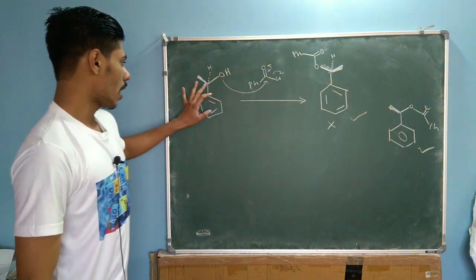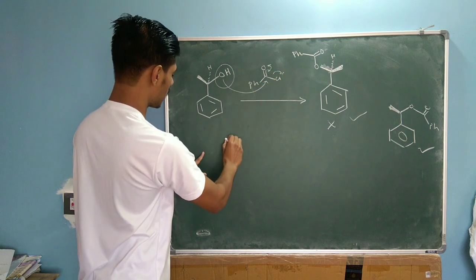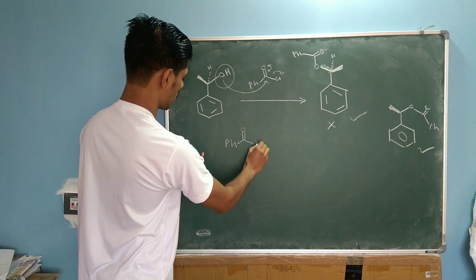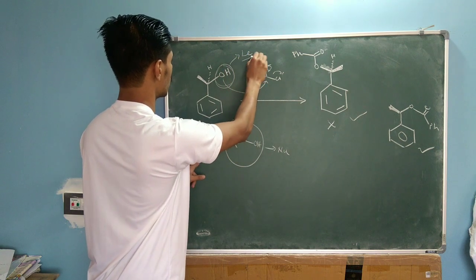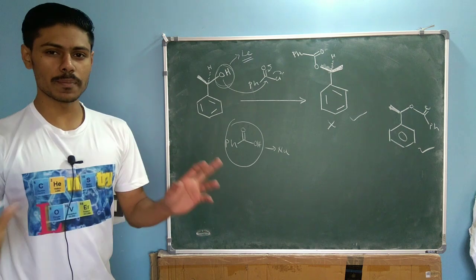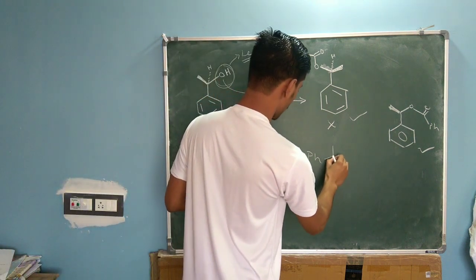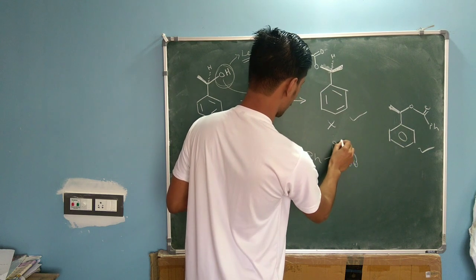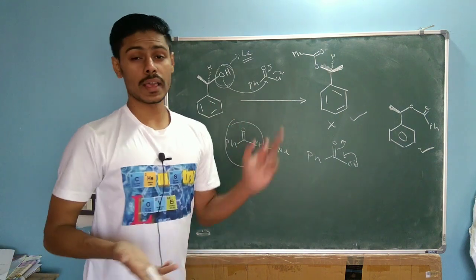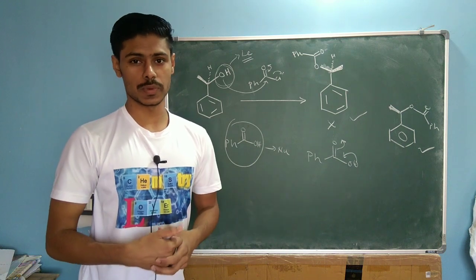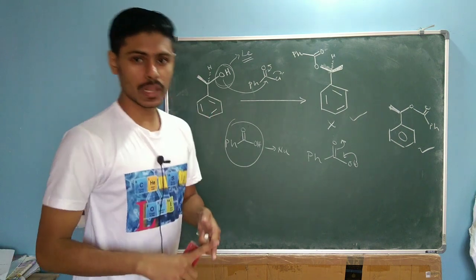So how can you get this product with inversion? For that, you should make the hydroxyl a leaving group and use the benzoate as your nucleophile. But OH minus is a very bad leaving group, and benzoate is a very bad nucleophile because the benzoate anion is delocalized. So you have to use a bad nucleophile and a bad leaving group to do an SN2 reaction, which is next to impossible.